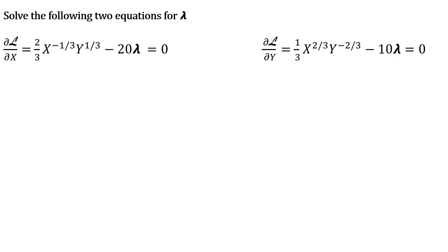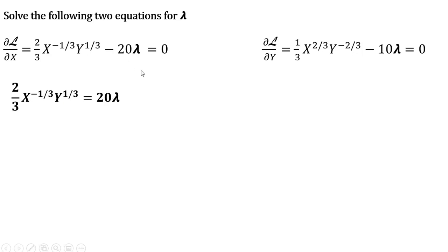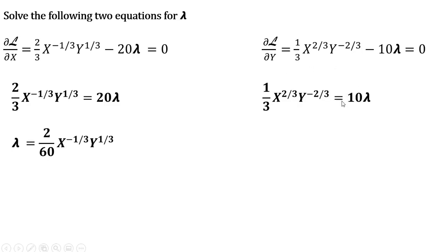From our first two partial derivatives, we have two equations, and we're going to solve each equation for lambda. Solving the left equation for lambda — moving minus 20 lambda over to the right-hand side and then dividing through by 20 — we have lambda equals that expression. Then from the next partial derivative result, we do the same thing and solve for lambda. Dividing through by 10, we have that result.